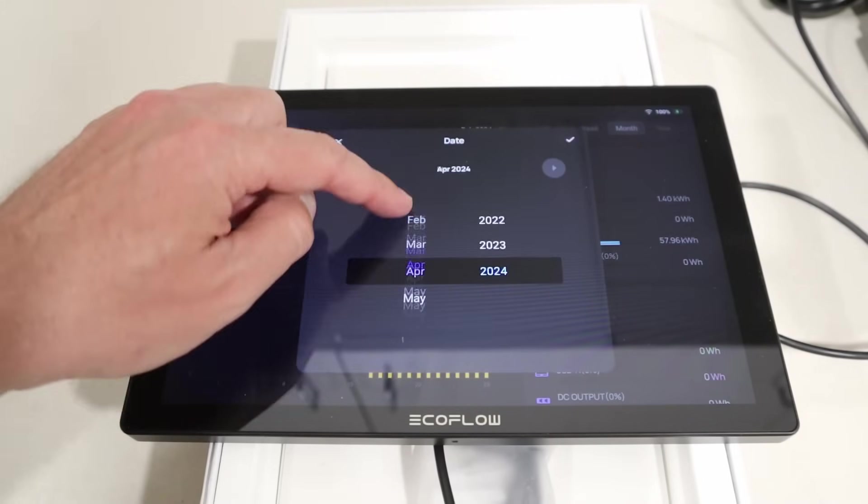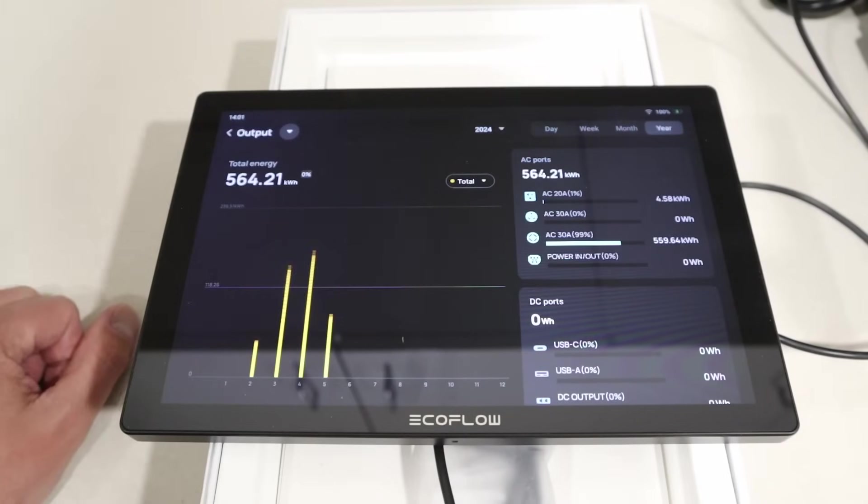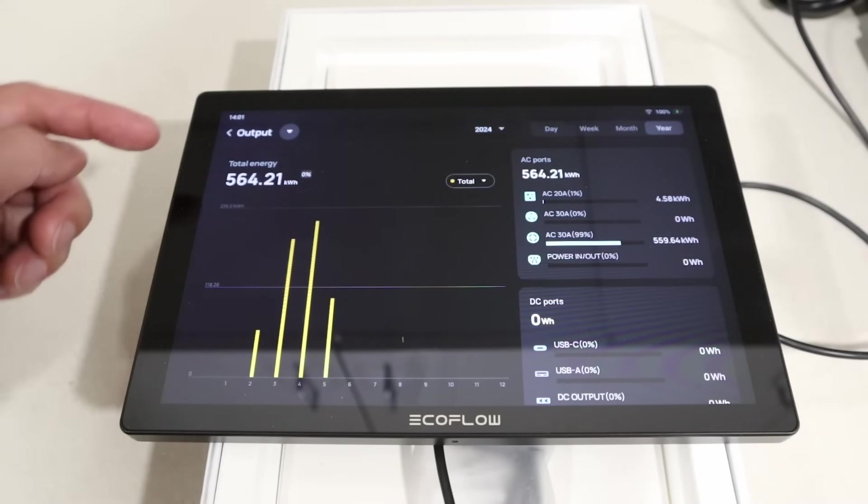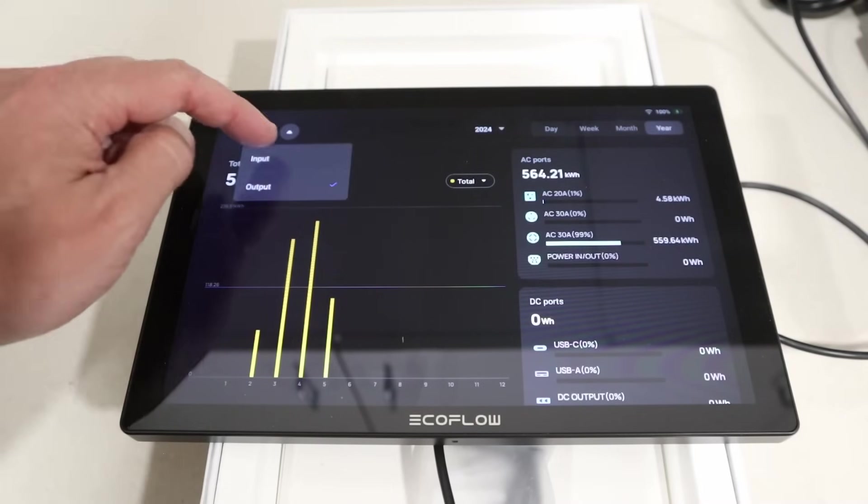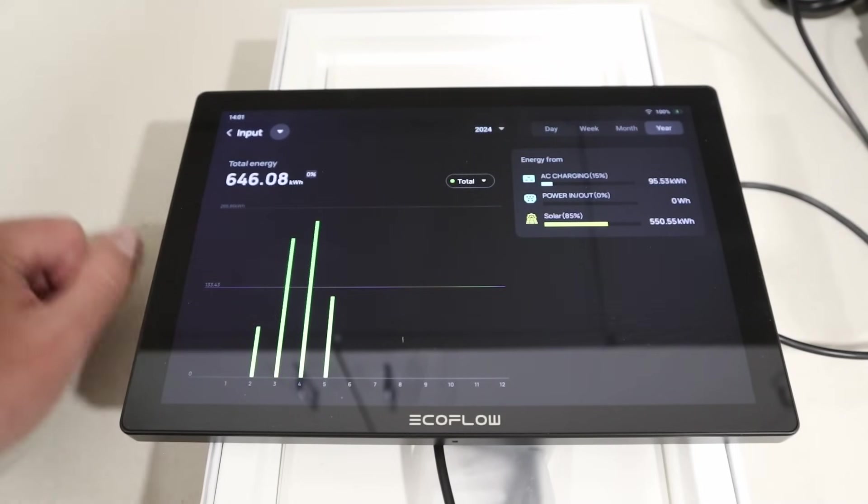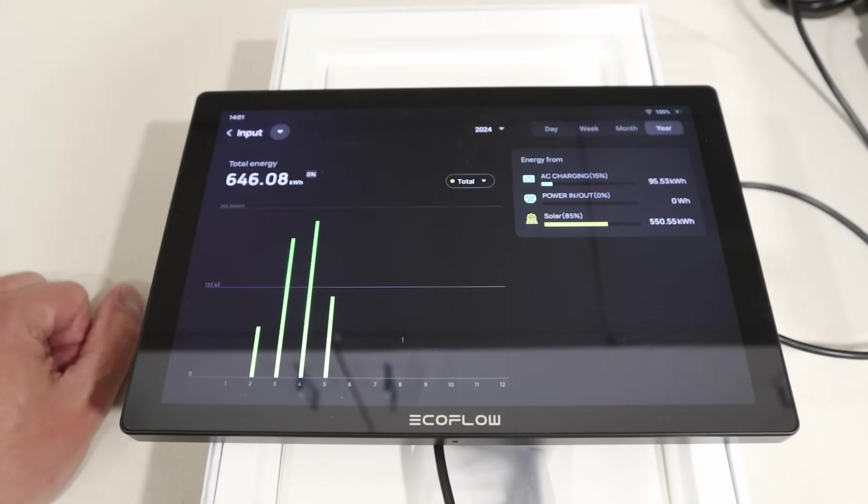Really cool breakdown to see what's going on with the data logging. I guess we could look at the year so far. So far, I have pulled 564 kilowatt hours from this unit. And for solar input, 646 kilowatt hours of solar. So really cool to be able to track this. It's going to be interesting to see how the year plays out with the data logging in this unit.